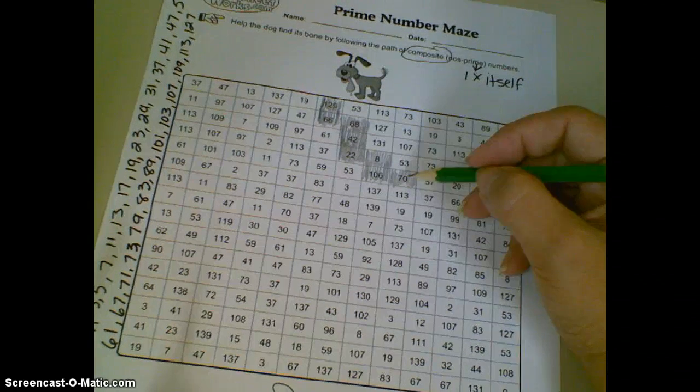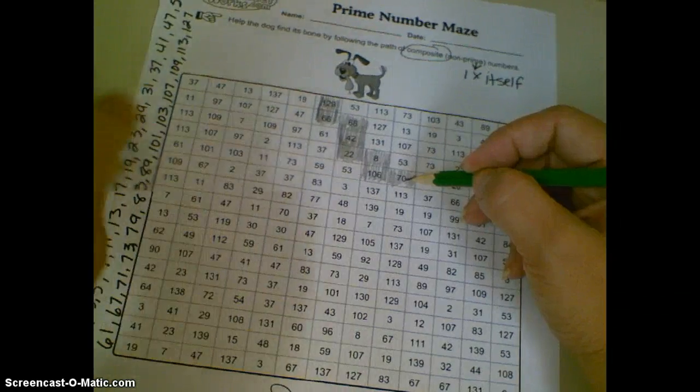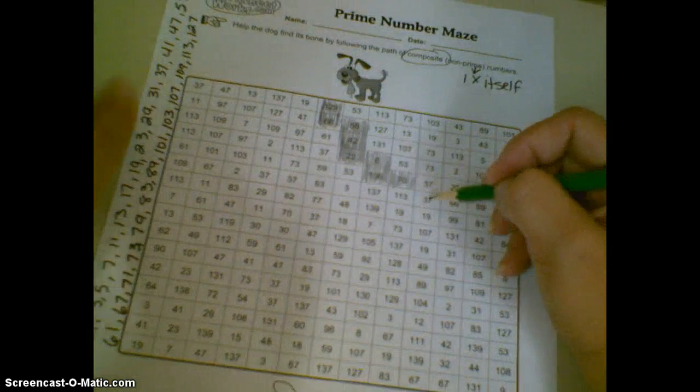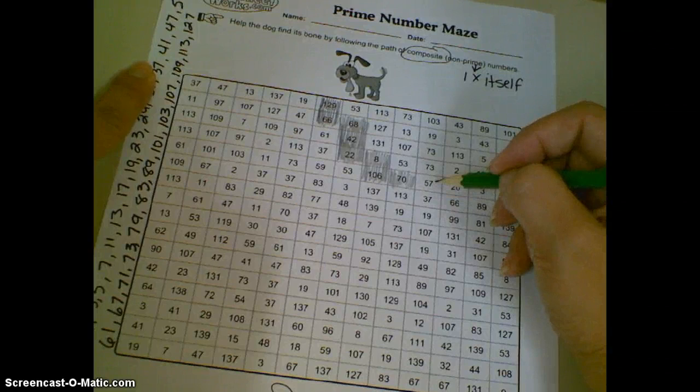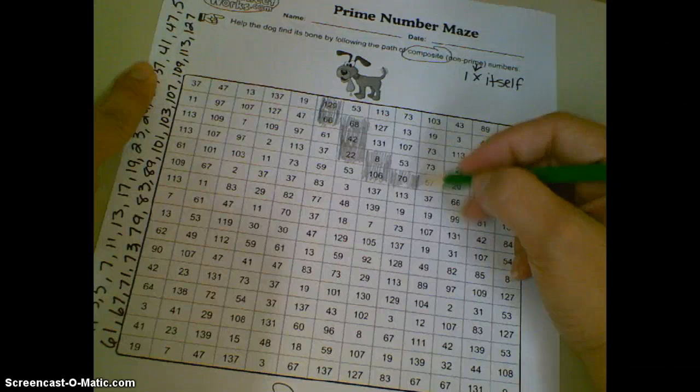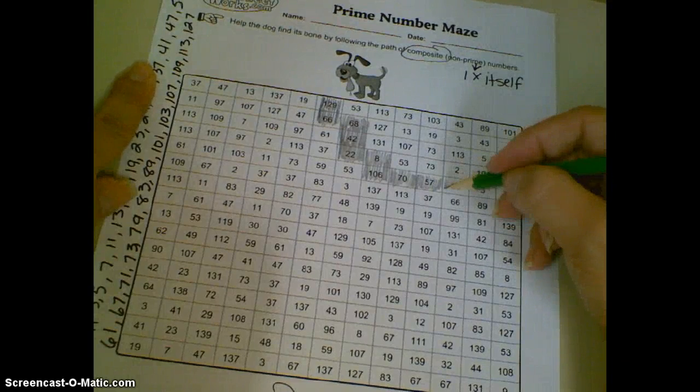And now, I don't have it so easy. We have to actually look at our list again. And our choices are 113, which is prime, 37, which is prime, 57 is not prime.